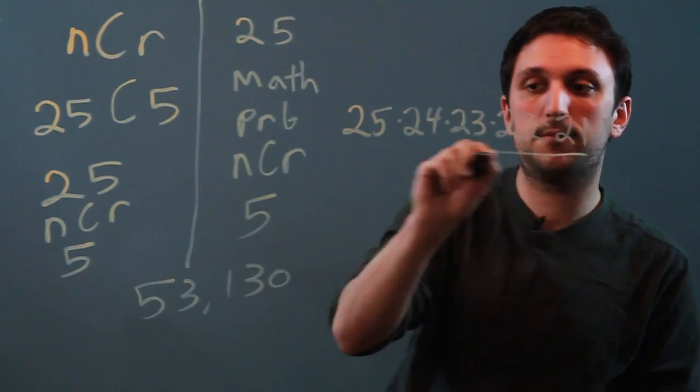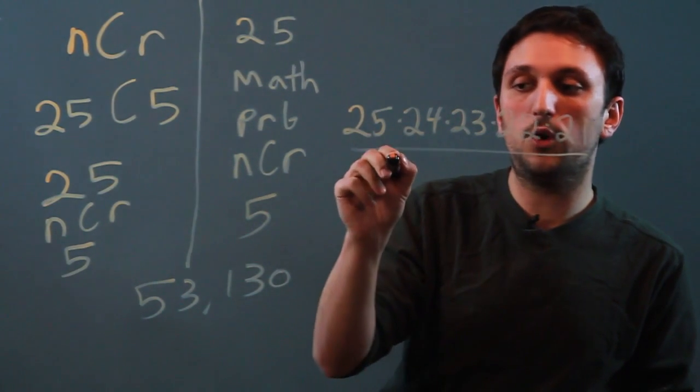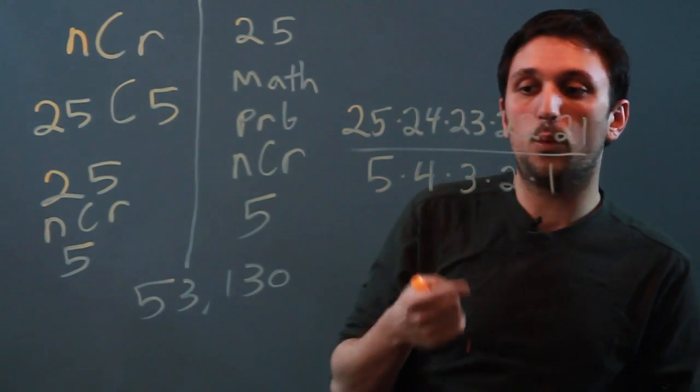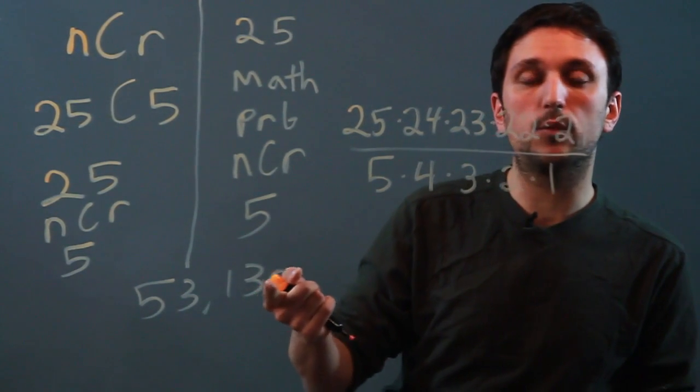because that's how many choices we had up top, 5, over 5 times 4 times 3 times 2 times 1, which would also equal 53,130.